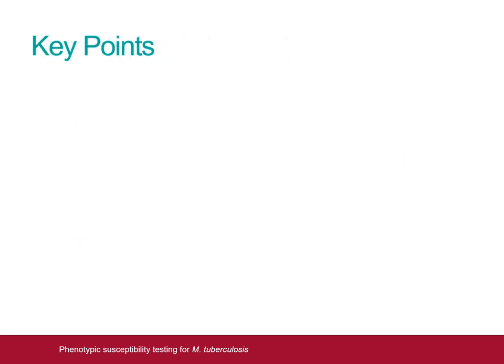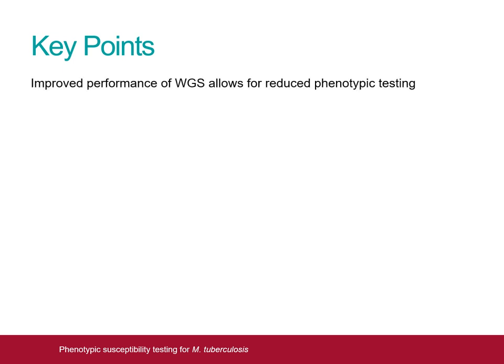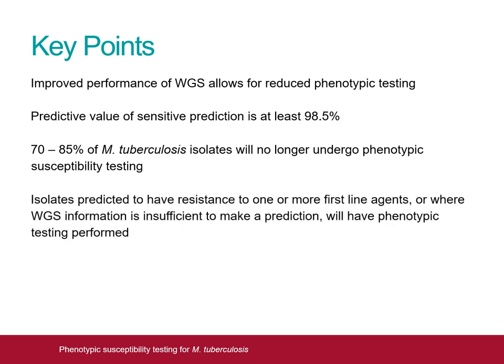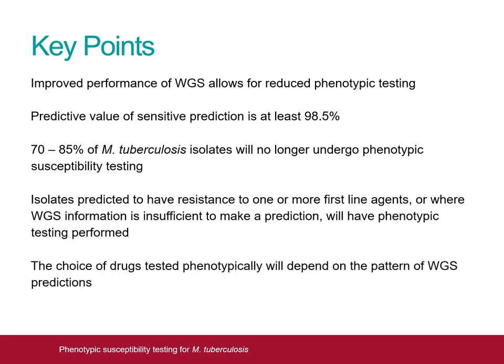In summary, recently published data improving the performance of WGS drug susceptibility predictions have reduced the need for phenotypic testing. The predictive value of a sensitive prediction for the four first-line drugs is now at least 98.5%. As a result, between 70 and 85% of all isolates submitted to the NMRS will no longer undergo routine phenotypic susceptibility testing. Isolates predicted to be resistant to at least one first-line agent will undergo phenotypic susceptibility testing, as will those where WGS data is insufficient to determine resistance. The number of drugs tested phenotypically will depend on the pattern of WGS susceptibility predictions.